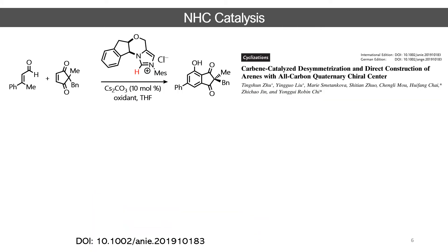Now I will discuss a recent report from Professor Robin Chi's group, where they utilized NHC carbene catalysis for the construction of all-carbon quaternary chiral centers. In this method they used a vinyl gas nucleophile, which I will discuss during the mechanism studies. This leads to a [4+2] cyclization generating a benzenoid structure, and such benzene ring formation from acyclic molecules is important in organic synthesis. This reaction is mainly catalyzed by a specific type of NHC carbene.